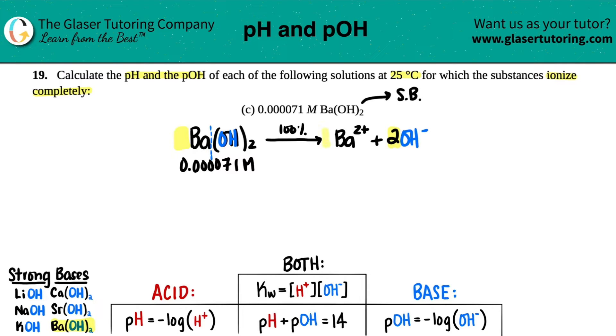It's a one to one to two. So that means that if I'm trying to find out what the barium concentration is, whatever number this is, it has to be the same, literally one to one. They're the same number. So if I have 0.000071 molarity for the barium hydroxide, what am I going to have for this? Yeah, it's going to be the same. 0.000071 molarity.